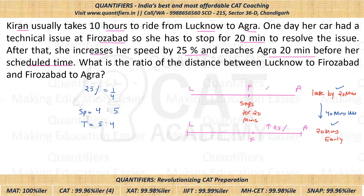From Firozabad to Agra, her usual speed is 4 and the new speed is 5, so speed ratio is 4:5 and time ratio is 5:4. She is saving 40 minutes, which is a difference of one part. So one part equals 40 minutes, meaning five parts equals 200 minutes.